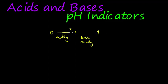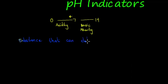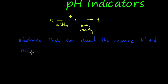When I talk about a pH indicator, I am talking about a substance that can detect the presence of hydrogen and hydroxide ions, and it does so by reacting with them and changing color.